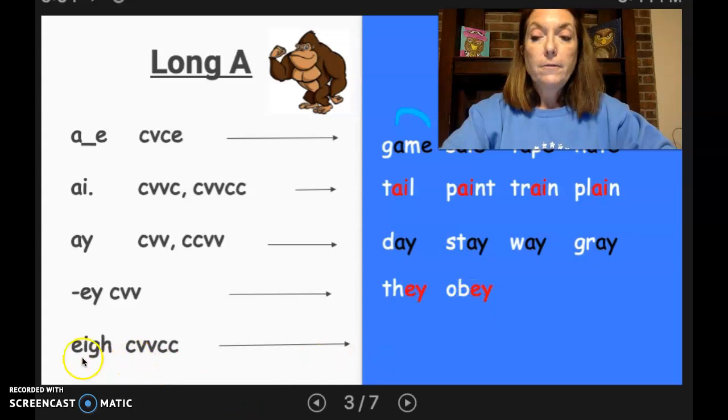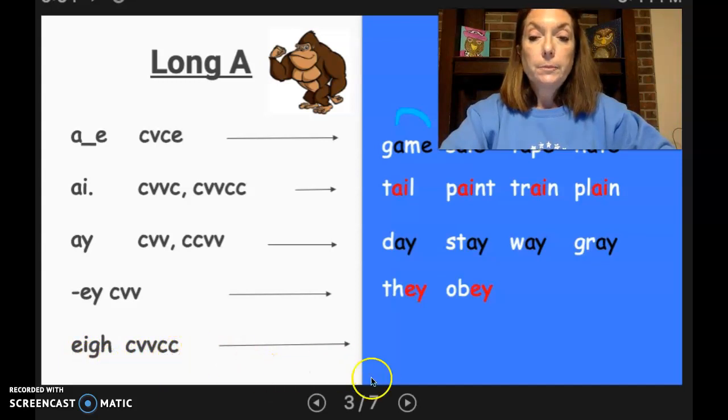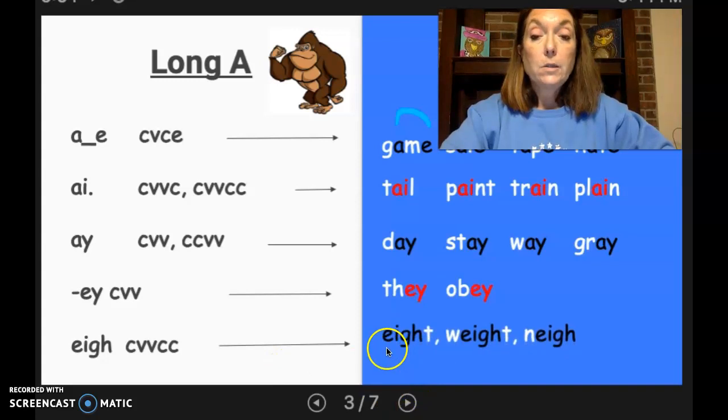Finally we have the spelling EIGH. And that would be consonant, vowel, vowel, consonant, consonant. And it would say the long A sound like in this word eight. And this kind of eight is the number weight and neigh. And that's the sound that a horse makes.